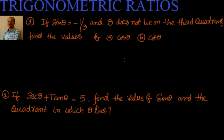Welcome! We are continuing with problem-centric trigonometric ratios. Let's solve the first problem: if sine theta equals minus 1 by 3 and theta does not lie in the third quadrant, find the values of cos theta and cot theta.